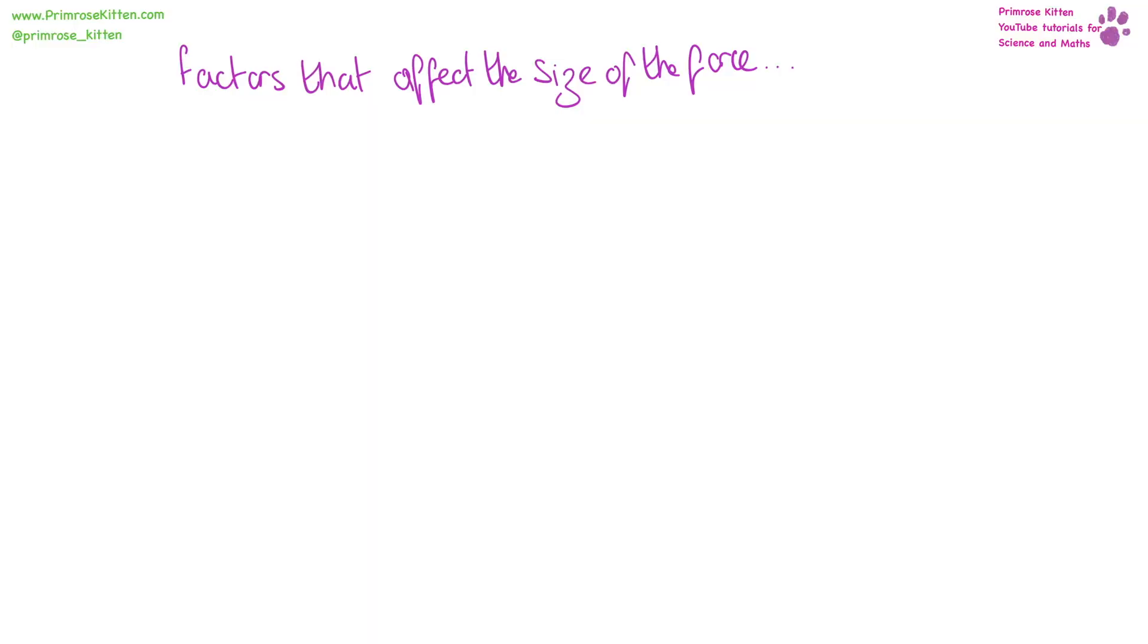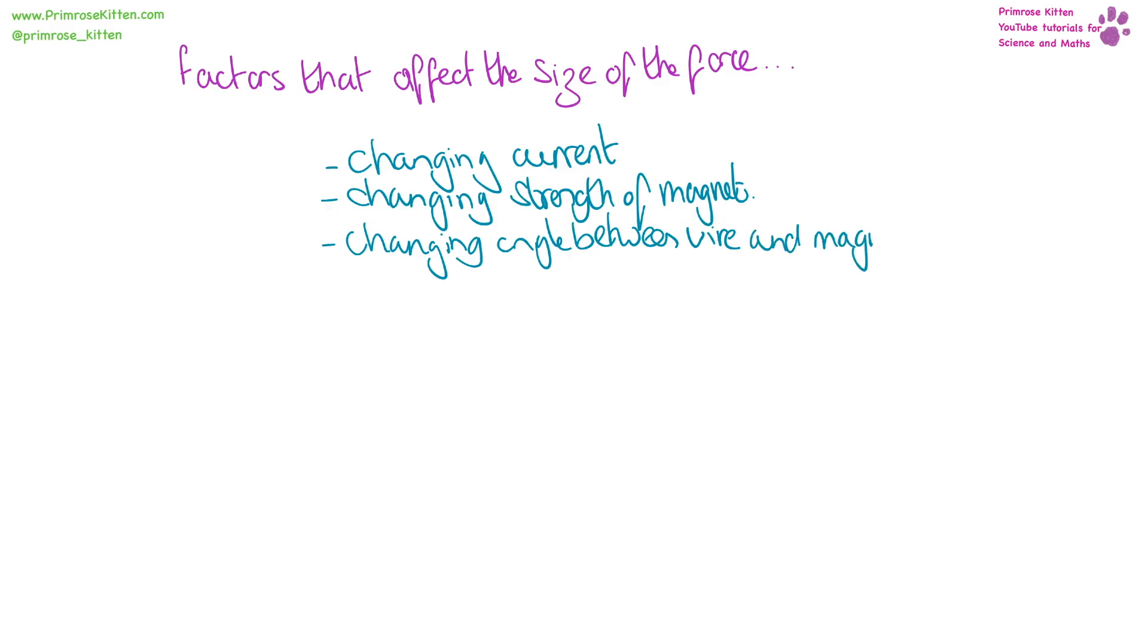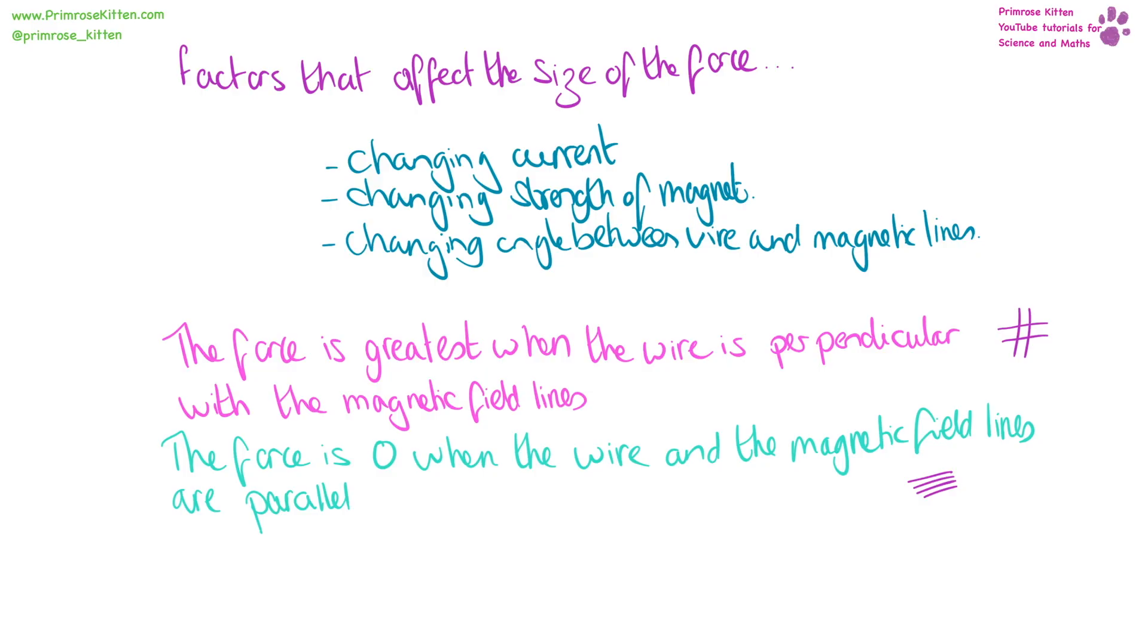We can change the size of the force by changing the current, by changing the strength of the magnet, or by changing the angle between the wire and the magnetic field lines. The greatest force is when the wire is perpendicular with magnetic field lines, and the force is zero when the wire and the field lines are parallel.